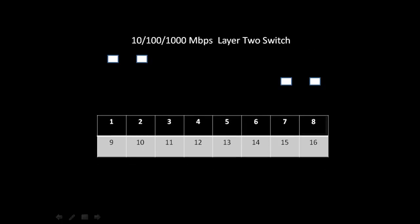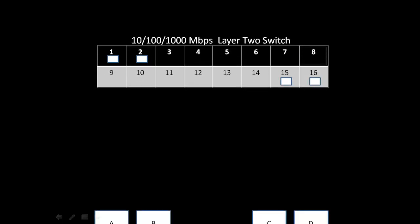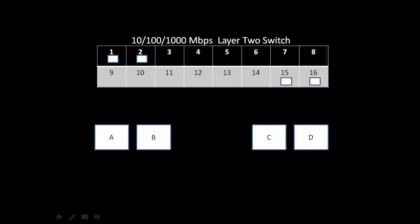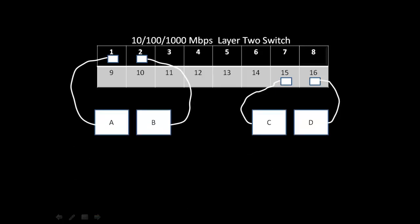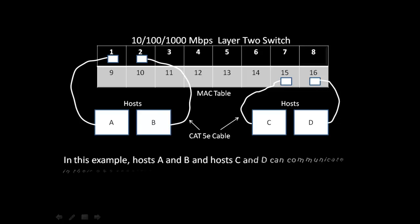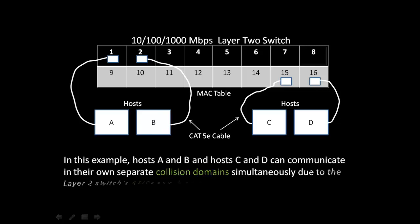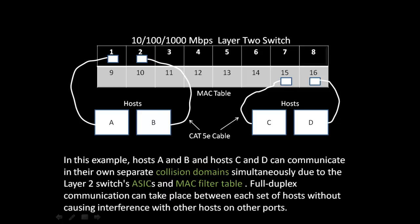Here we have a 10/100/1000 megabit per second layer 2 switch, or gigabit switch, with four hosts connected to four ports of this 16-port switch. The switch has a MAC table, and each host is placed in its own collision domain. Host A and B and host C and D can communicate in their own separate collision domains simultaneously due to the layer 2 switch's ASICs and MAC filter table.